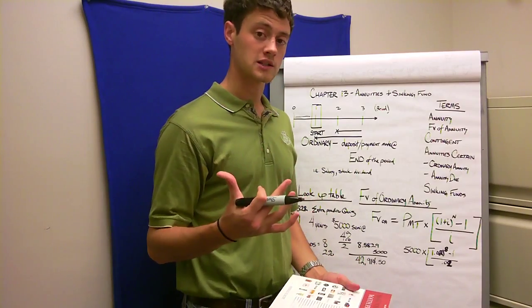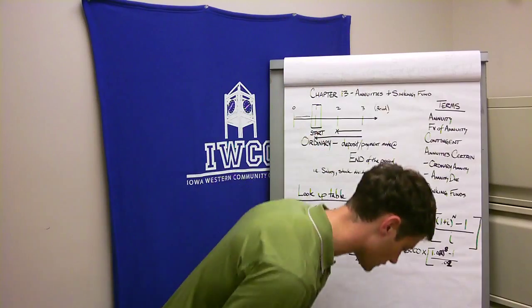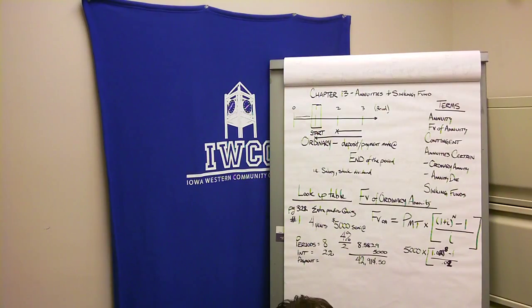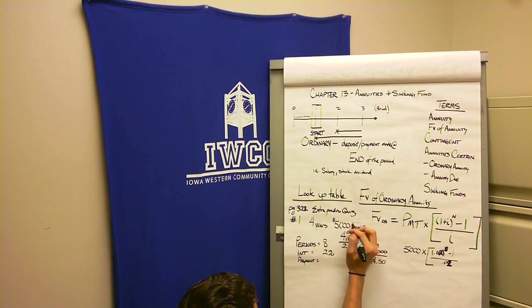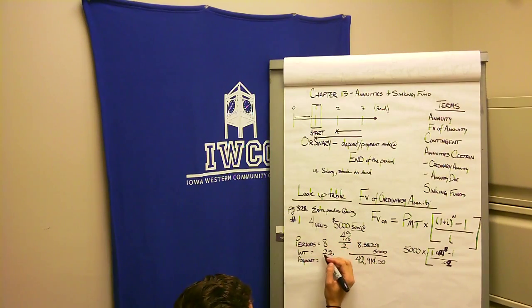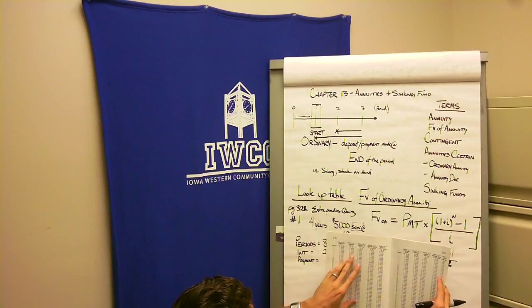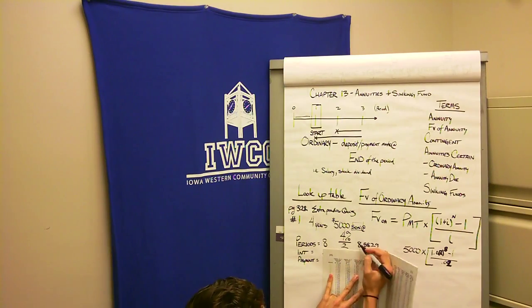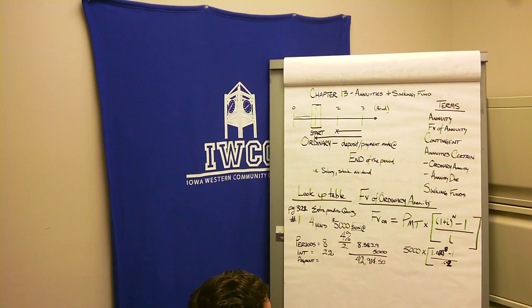Let's do the extra practice problem on page 322. It says to use table 13-1 to find the value of an investment after four years on an ordinary annuity of $5,000 made semi-annually at 4%. I've got four years at $5,000 at 4%. Since it's semi-annually, my period is now 8 and my interest is 2%. Looking up period 8 at 2% in table 13-1, I find 8.5829. Multiplied by $5,000, that gets us $42,914.